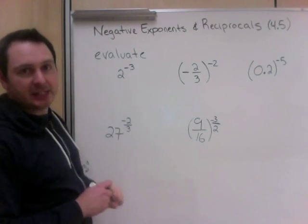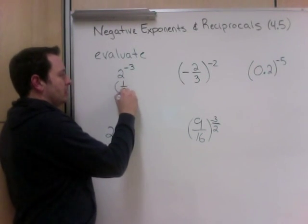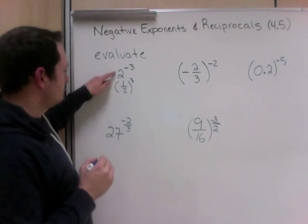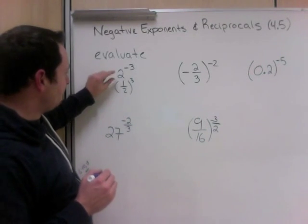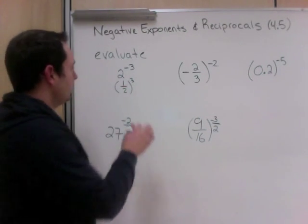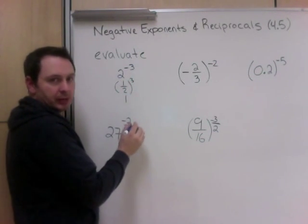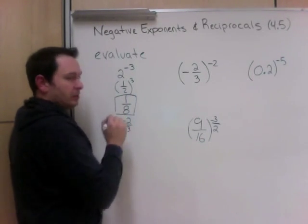So here we have 2 to the power of negative 3. Well, that negative, I need to deal with that first. This is 1 half cubed. Okay, so 2 is 2 over 1. The reciprocal of 2 over 1 is 1 over 2. So the negative flipped it, and now it's cubed. 1 cubed is 1. 2 cubed, 2 times 2 times 2 is 8. So my answer is 1/8.